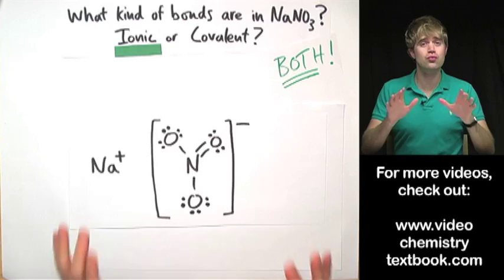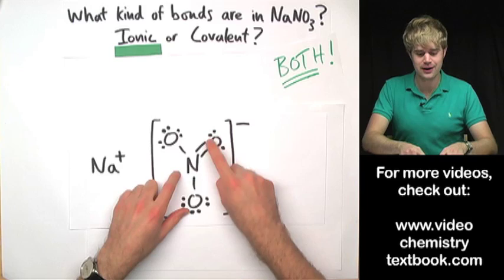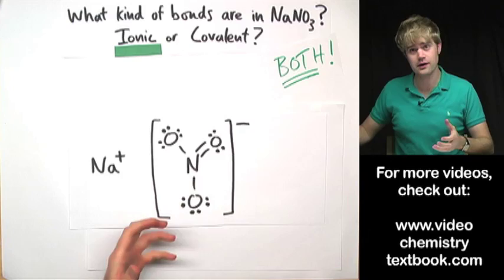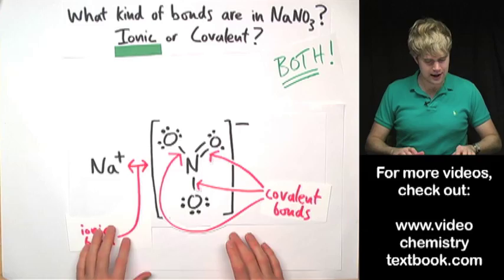We can really show this if we look at Lewis structures. So here's Na plus. Now here's the Lewis structure for nitrate, NO3. These lines between atoms show that they're sharing electrons and they're connected because of covalent bonds. So there's a covalent bond here, here, and here holding together the atoms in nitrate. And then there is an ionic bond between all of nitrate that has this negative charge and Na plus.